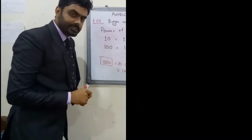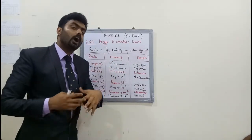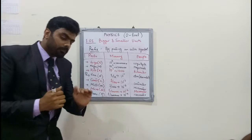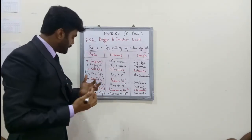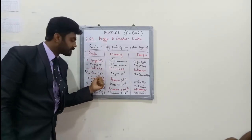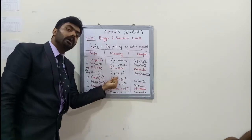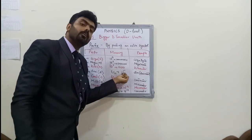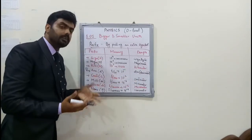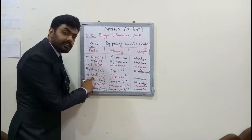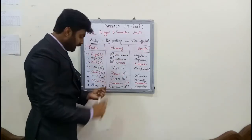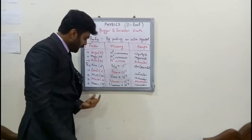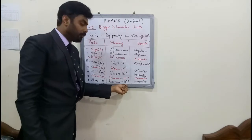Now we start studying about bigger and smaller units. Units are made bigger or smaller by using a prefix. For the smaller prefixes: deci (symbol d) has value 10 to the power minus 1, example decimeter; centi (c) is 10 to the power minus 2; milli (m) is 10 to the power minus 3; micro (symbol μ) is 10 to the power minus 6, example micrometer; and nano (n) is 10 to the power minus 9, example nanometer.